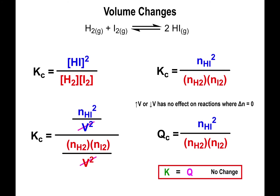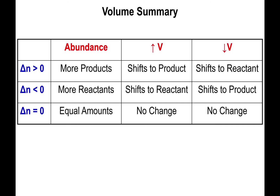You can set up a table using delta N — the sum of coefficients of products minus the sum of coefficients of reactants. If delta N is greater than zero, you have more products: increasing volume shifts to the product side, decreasing volume shifts to the reactant side. If delta N is less than zero, you have more reactants: increasing volume shifts to the reactant side, decreasing volume shifts to the product side. If delta N equals zero, changing volume produces no change whatsoever.